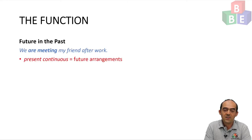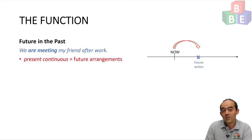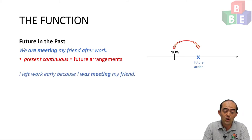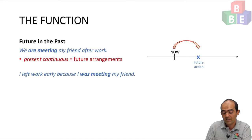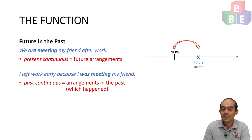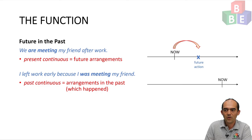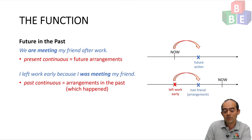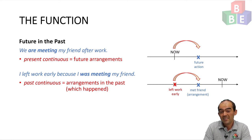We can use the present continuous to talk about future arrangements made from the perspective of now, but what about future in the past arrangements? 'I left work early because I was meeting my friend.' Here I'm using the past continuous — was meeting — and this is an arrangement in the past which did happen. In the past, my first past action was leaving work early, and then after that, still in the past, was my arrangement: meeting my friend.